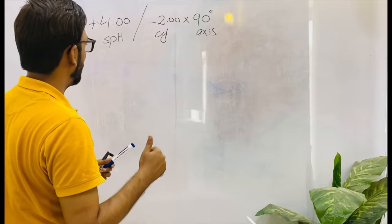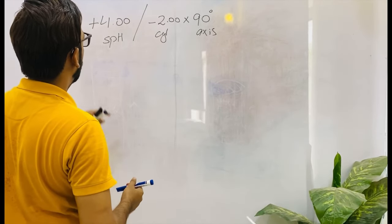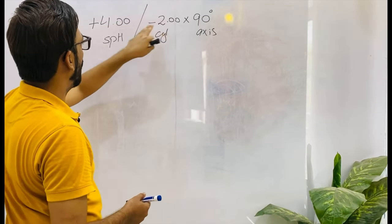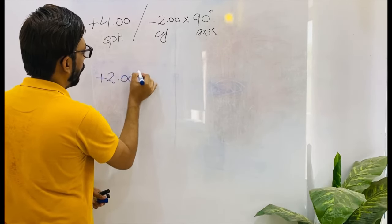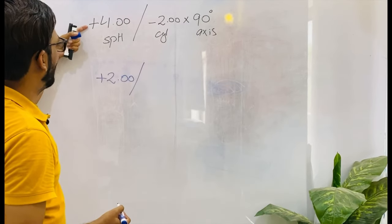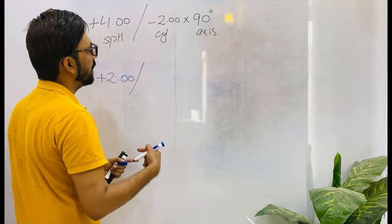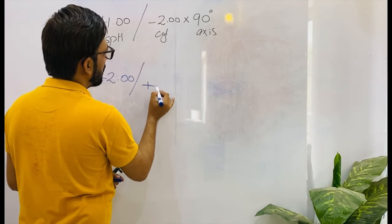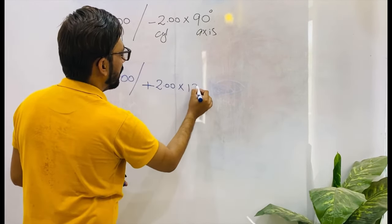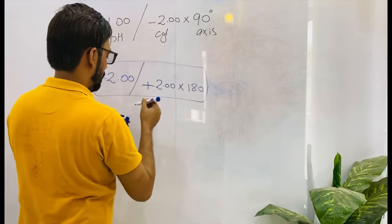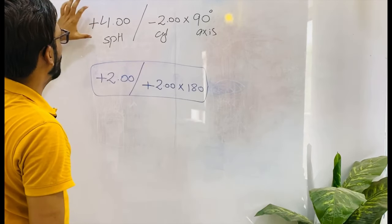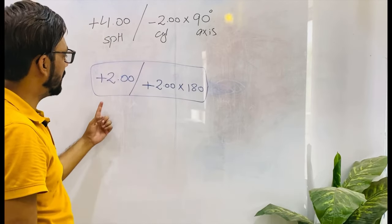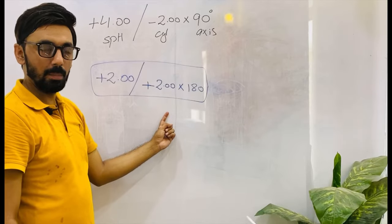So again, if you face any prescription in which the spherical correction is greater than the cylindrical correction with opposite signs of both, you have to transpose that prescription to analyze the type of astigmatism. Let's transpose it. First step: add cylinder into spherical — plus four and minus two — so subtracting minus two from plus four gives us plus two, since the greater value carries the plus sign. Second step: change the sign of the cylinder from minus to plus two. The axis was 90 degrees and it goes to 180 degrees. So when we transposed it, this is now a compound astigmatism — compound hyperopic astigmatism.